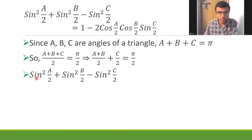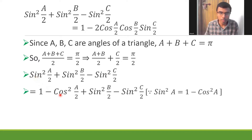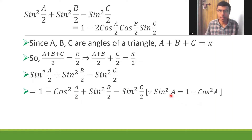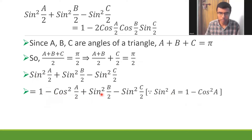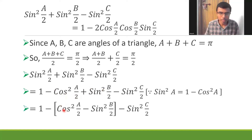For that, I'm going to write sin²(a/2) as 1 - cos²(a/2), because sin²A = 1 - cos²A. It's good to mention the reason like this — it'll make you stand out. So now I have 1 - cos²(a/2) + sin²(b/2). But I want cos²(a/2) - sin²(b/2), so I take minus common from those two terms, giving me: 1 - [cos²(a/2) - sin²(b/2)] - sin²(c/2).